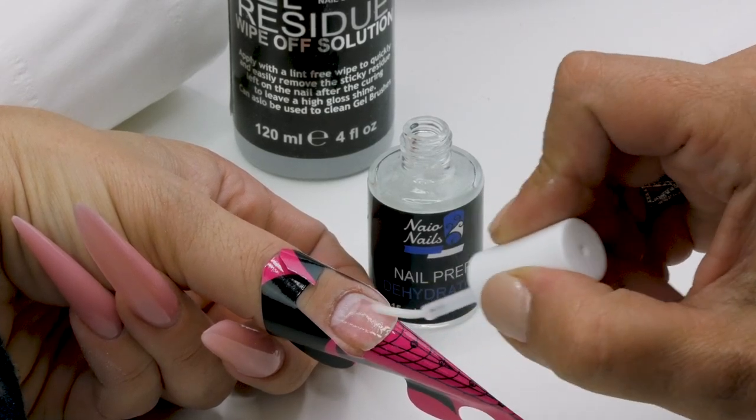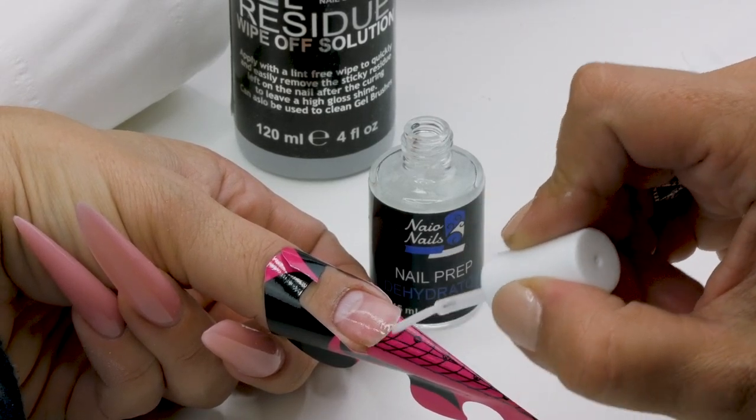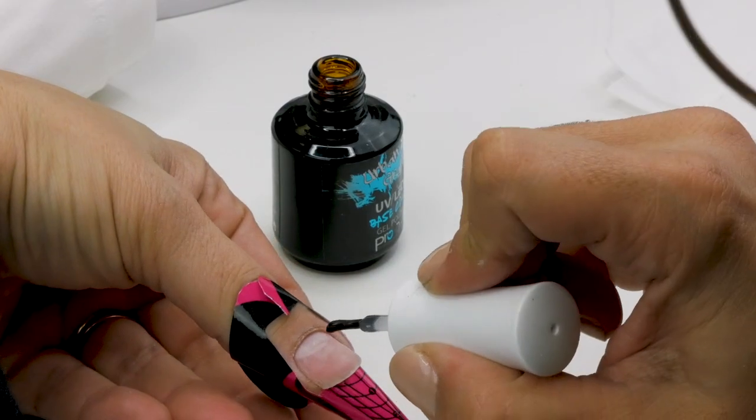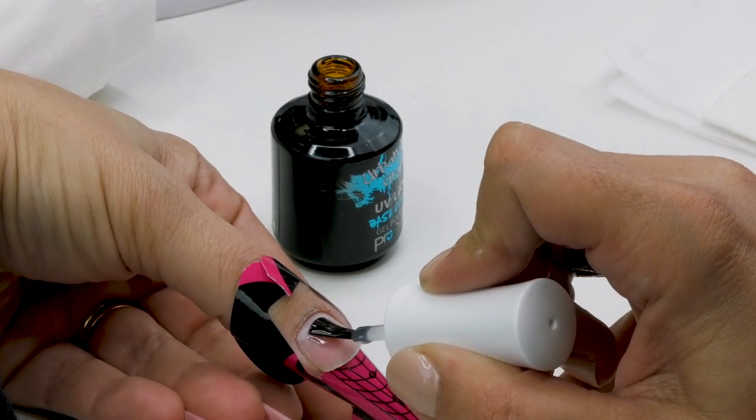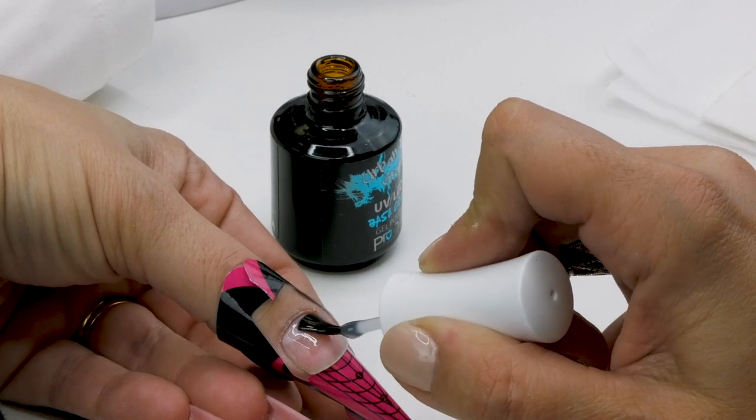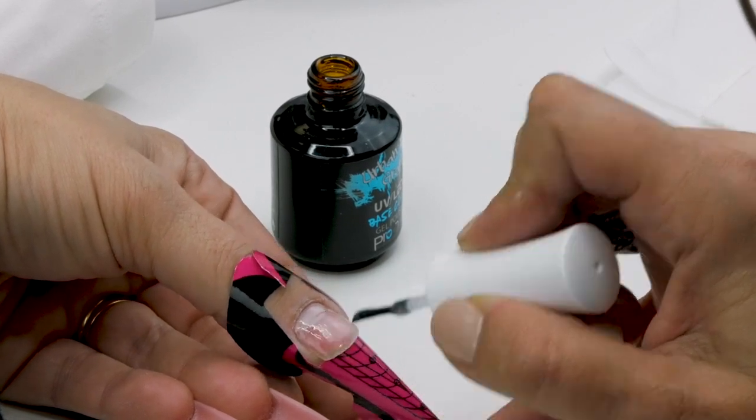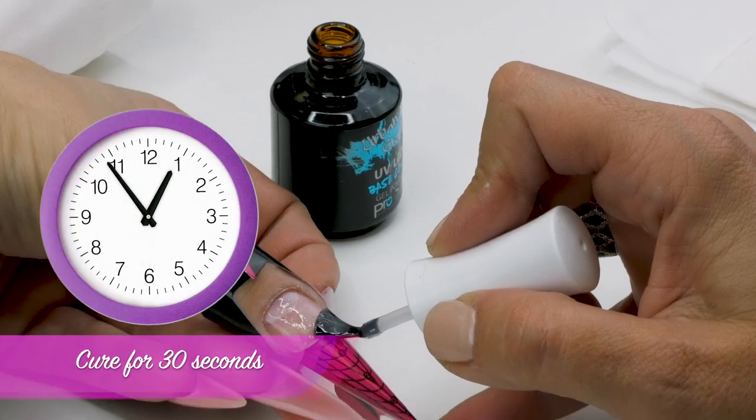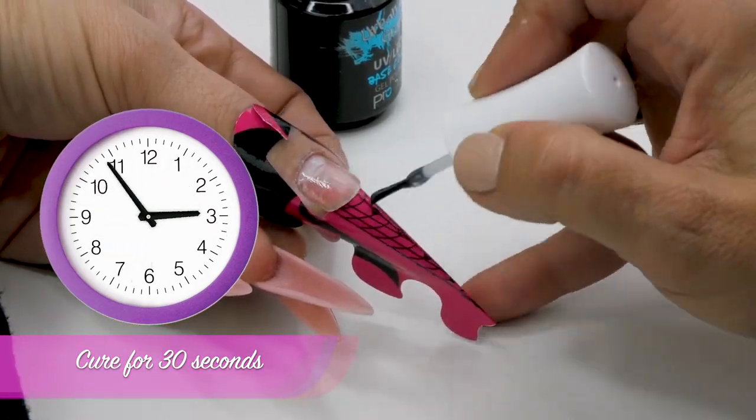First, I'm going to dehydrate my nail with the Nail Prep Dehydrator. And I'm going to apply one coat of base coat. Apply near the cuticle area, but without touching them. And cure for one minute.